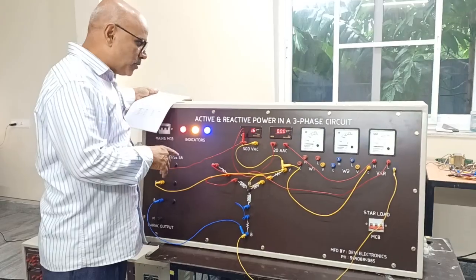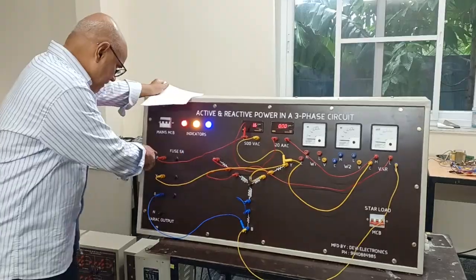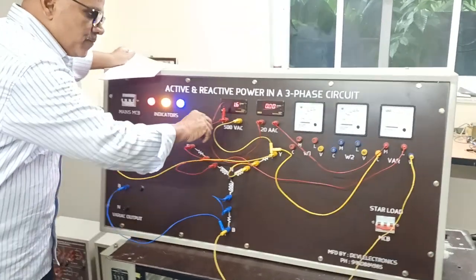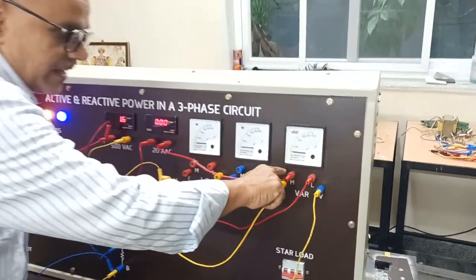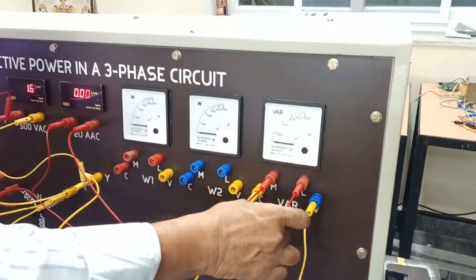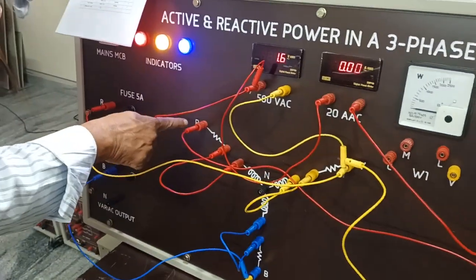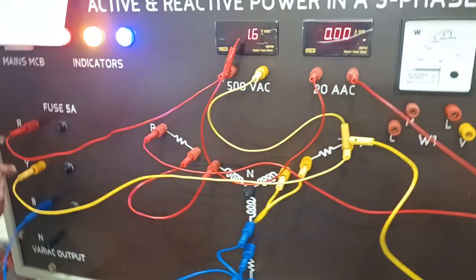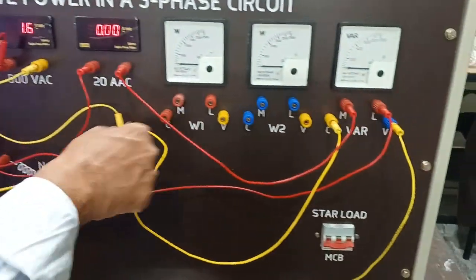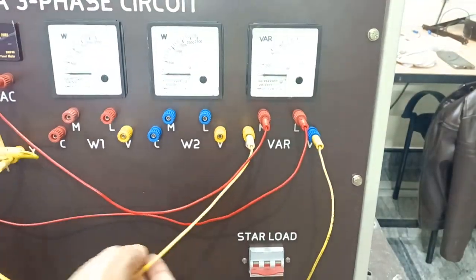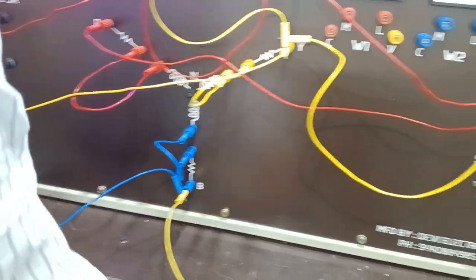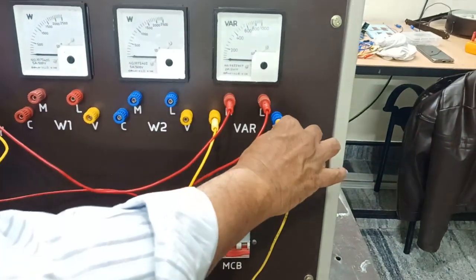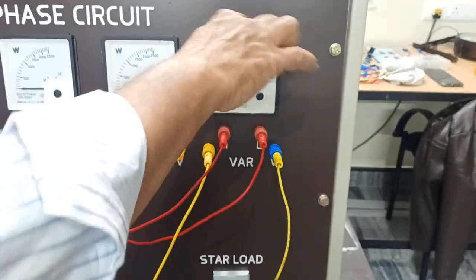Now we are going to perform reactive power measurement. R phase to junction point to ammeter, ammeter to M of wattmeter. L goes back to R starting point. Yellow to yellow, and B to B. This is the potential coil of the wattmeter.